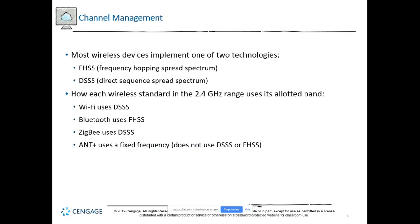Channel management: most wireless devices implement one of two technologies to take advantage of frequencies within their band to avoid interference. FHSS — frequency hopping spread spectrum — sends short bursts of data on a particular frequency, then hops to the next. DSSS divides data streams into small chunks spread across all available frequencies. Wi-Fi uses DSSS with 20 MHz wide channels in the US, Bluetooth uses FHSS across 79 channels, Zigbee uses DSSS with 16 channels, and ANT Plus uses a fixed frequency.